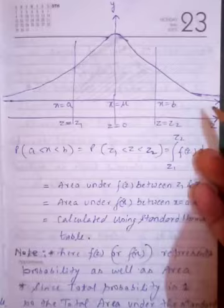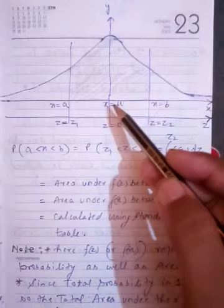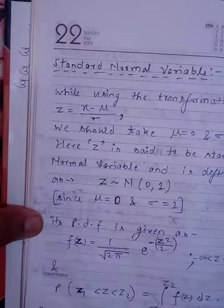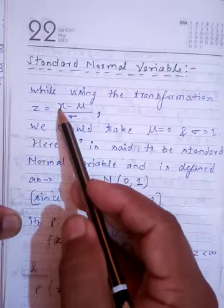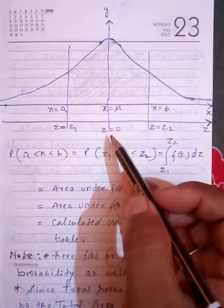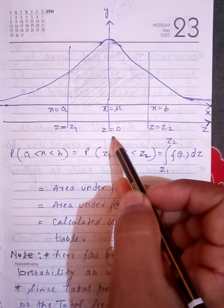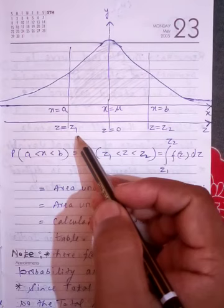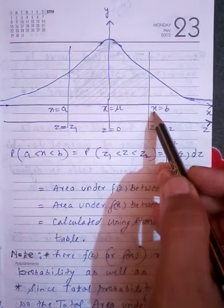When we convert the normal variable x to the standard normal variable z, we look at what value z takes. When x = mu, using transformation z = (x - mu)/sigma, we get z = (mu - mu)/sigma = 0/sigma = 0. So the point x = mu on the x-axis corresponds to z = 0 on the z-axis. Similarly, for x = a, using the same transformation gives z = z1.